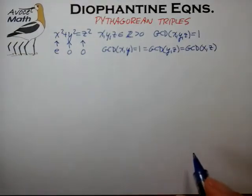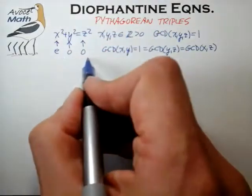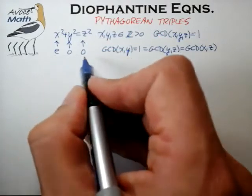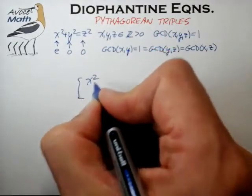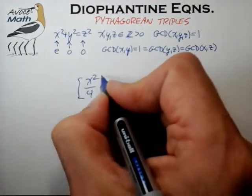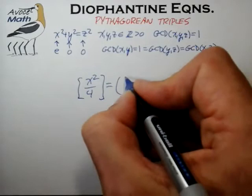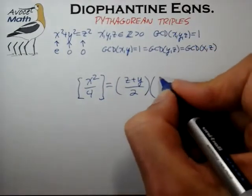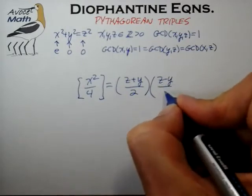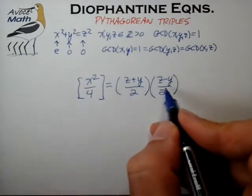That will be important in the follow-up arguments. We also found that when we analyzed the equation in terms of even, odd, odd, we came to the conclusion that our Pythagorean solution can be written in the form x²/4 = (z+y)/2 × (z−y)/2, where each of these terms is now a whole number.